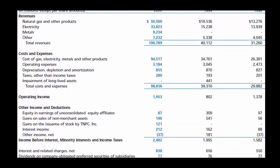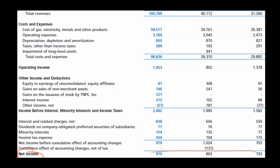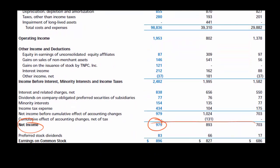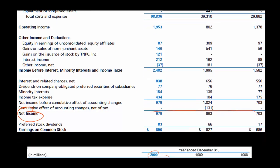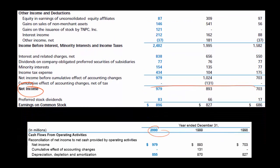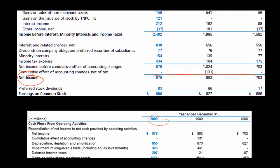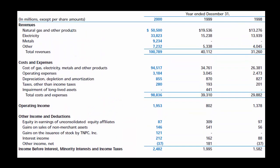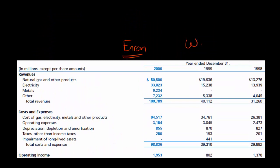When you look at the earnings number — $979 million of profit — there are a lot of different expenses. You want to go through each of these and ask whether any expense has been understated. Maybe they've capitalized some expenses. That's what happened with WorldCom — a multi-billion dollar fraud.